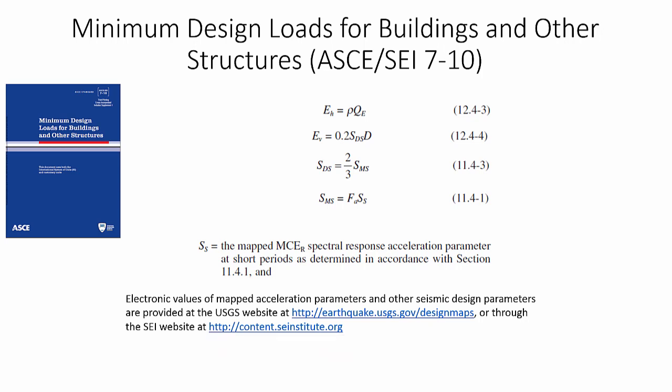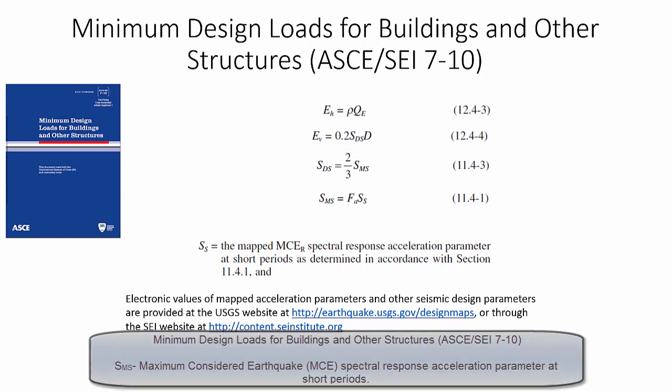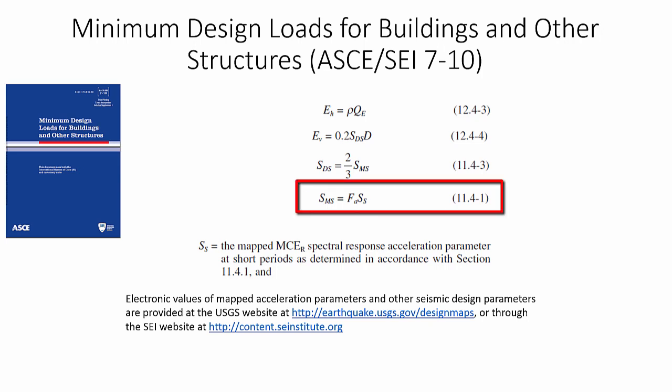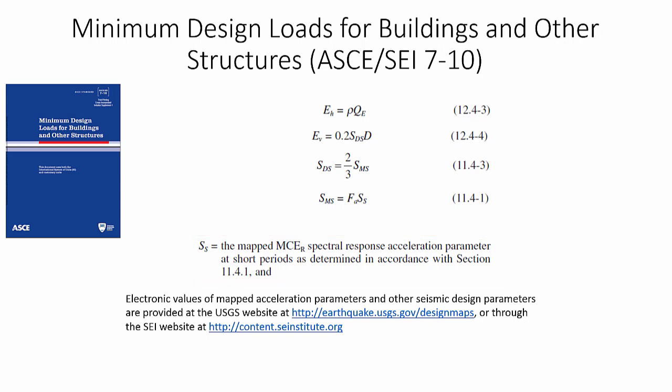The design spectral response acceleration parameter at short periods SDS is obtained by an equation where SMS is the maximum considered earthquake spectral response acceleration parameter for short periods. SMS is defined by the equation in ASCE 7 where FA is the site coefficient factor and SS is the maximum considered earthquake spectral response acceleration parameter determined from figures in the ASCE 7 standard. Note that electronic values of map acceleration parameters and other seismic design values are also available at the USGS website referenced in the ASCE 7 standard.